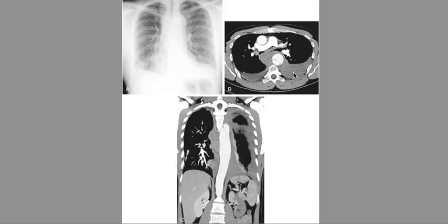There are two schemes for classifying aortic dissections: DeBakey's classification and the Daily's classification, also known as the Stanford classification. Starting with the Stanford classification, it's divided between Type A and Type B. A good mnemonic is that Type A involves the ascending aorta, and approximately two-thirds of acute dissections are Type A. DeBakey's classification has Type 1, Type 2, and Type 3.